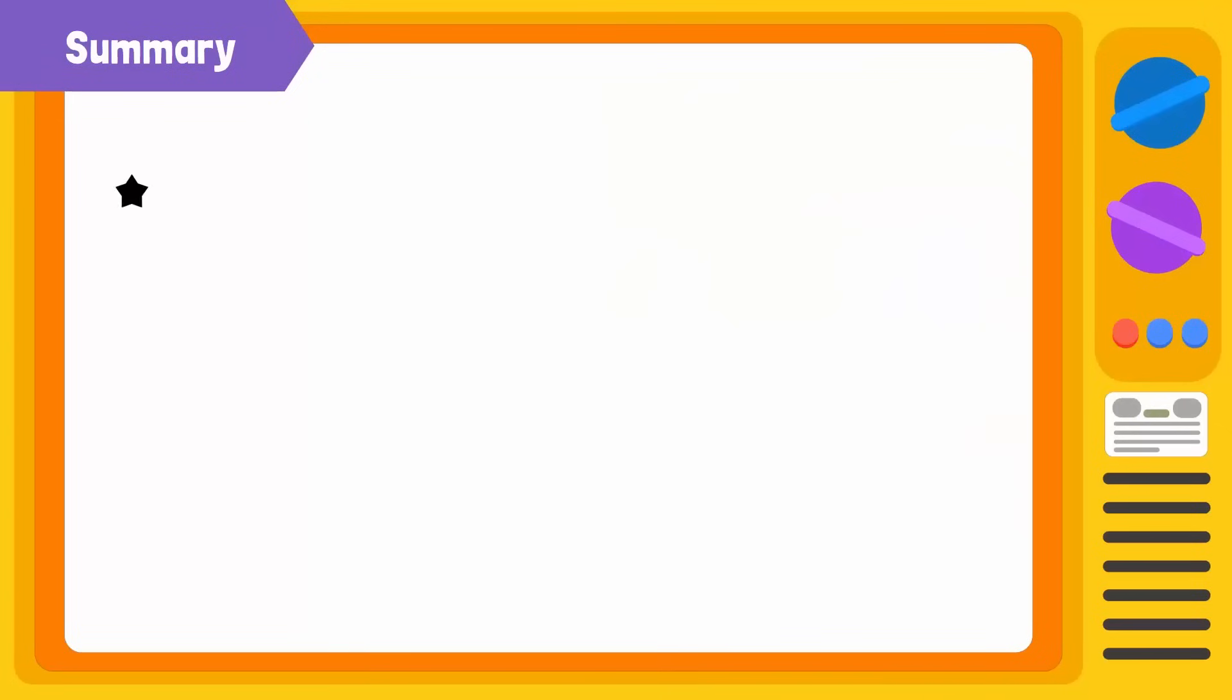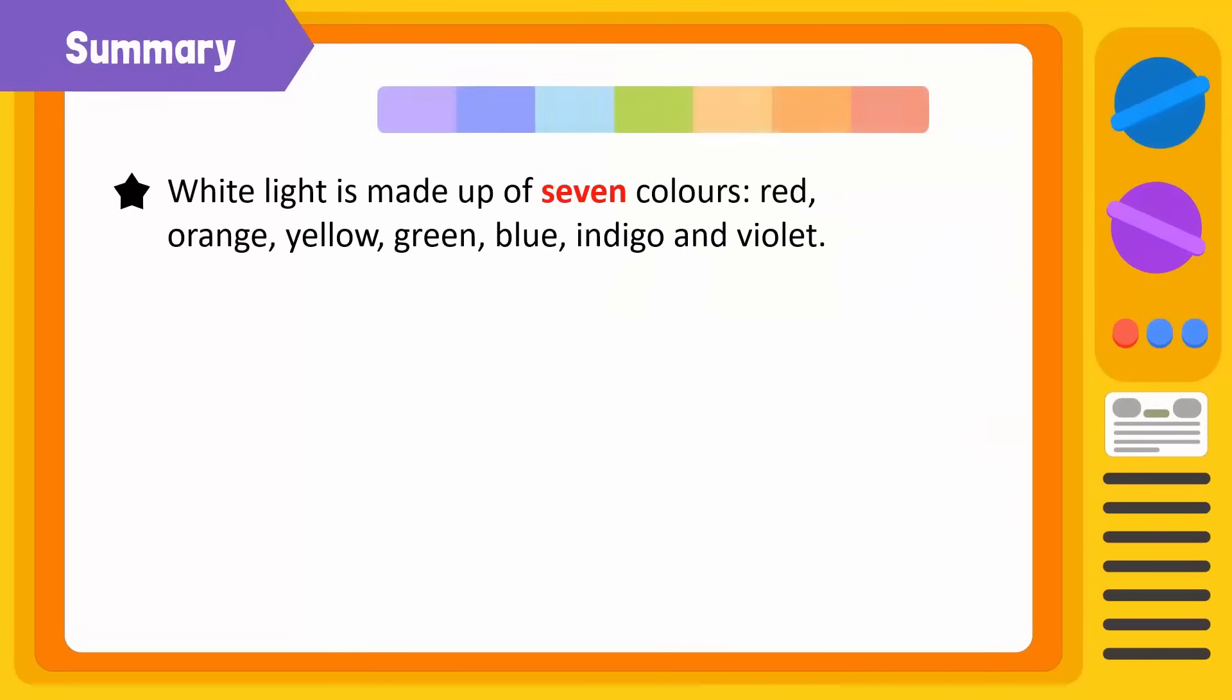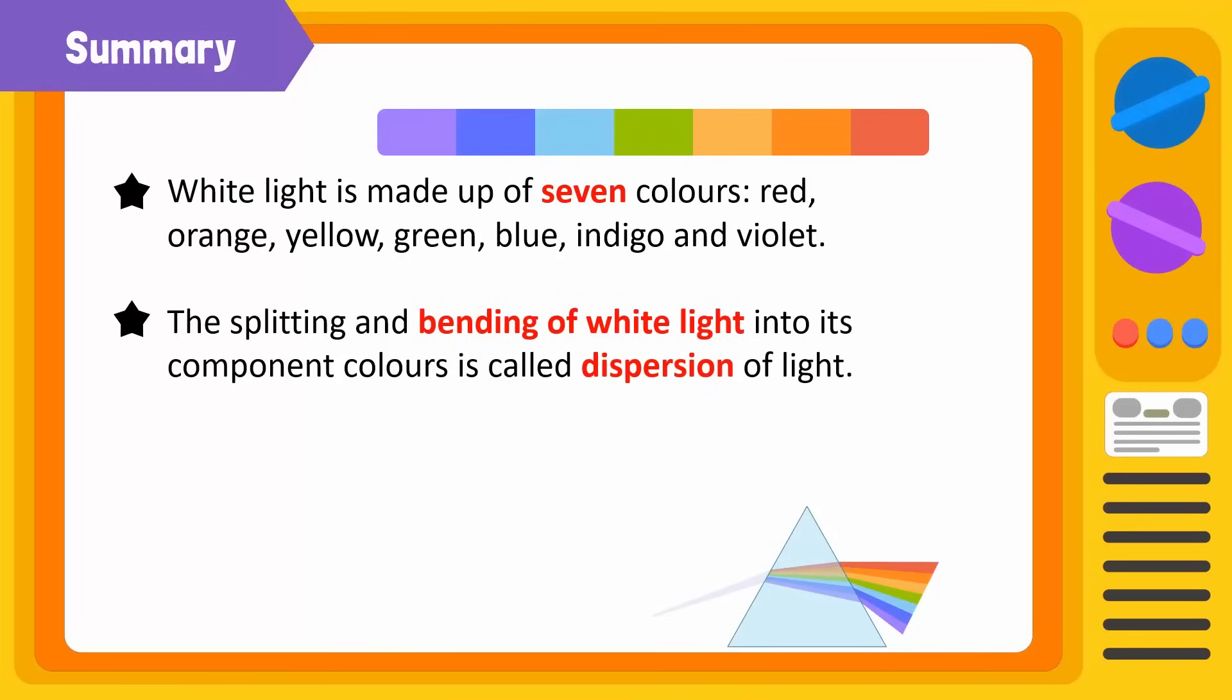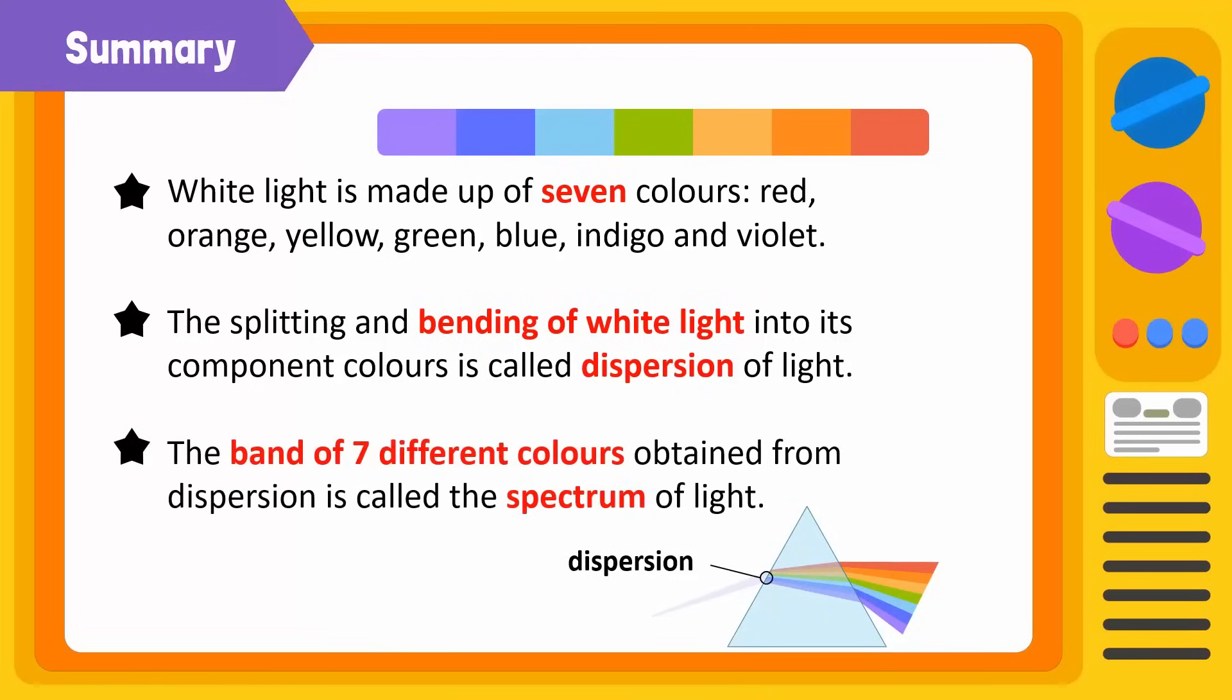Today we've learned that white light is made up of seven colors: red, orange, yellow, green, blue, indigo, and violet. The splitting and bending of white light into its component colors is called dispersion of light. The band of seven different colors obtained from dispersion is called the spectrum of light.